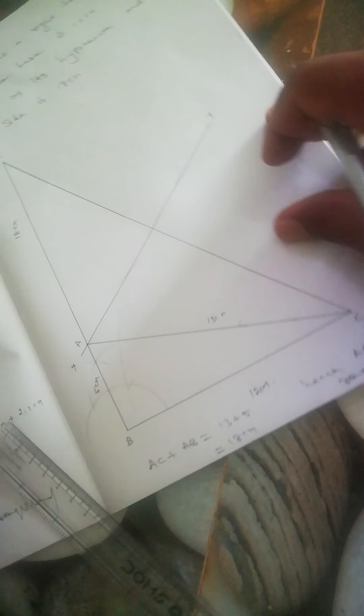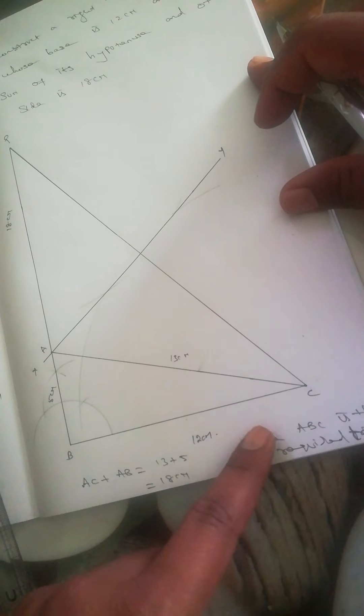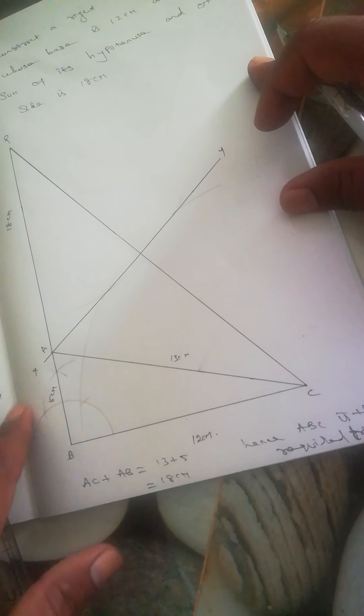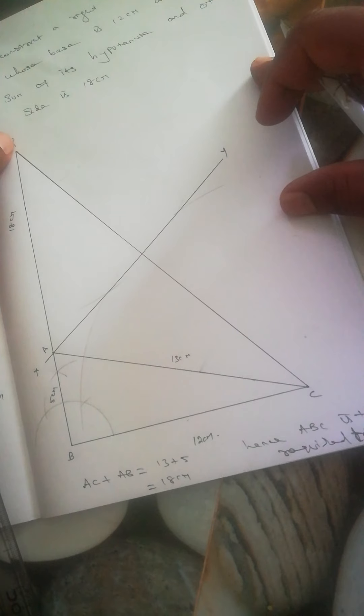To explain once more: Draw BC as 12 centimeters. From B, construct a 90-degree angle. Along this angle, mark 18 centimeters and join to C.